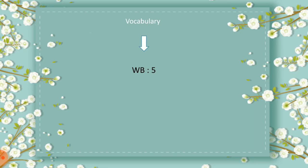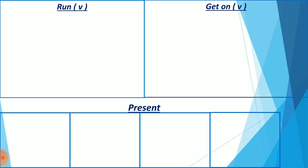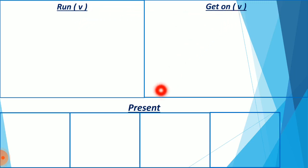Now let's do the vocabulary exercises from the workbook, page 5. In workbook page 5 there were three words: 'run,' 'get on,' and 'present.' These words are distinguished by each having more than one meaning — for example, 'run' has more than one meaning depending on its context in the sentence, and the same applies to 'get on' and 'present.' Note that 'present' is also different in that even its pronunciation changes depending on its function as a noun or verb.